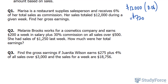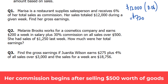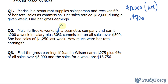Question 2: Melanie works for a cosmetic company and earns $200 a week in salary plus 30% commission on all sales over $500. She had sales of $1,250 last week. How much were her total earnings? She only starts to earn commission if she sells more than $500, and it's a big percentage — 30%.